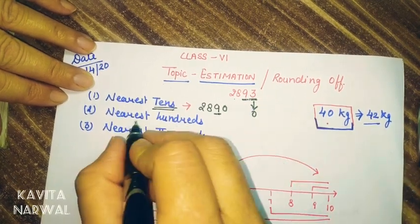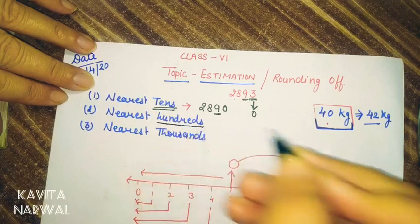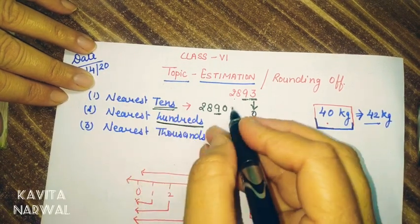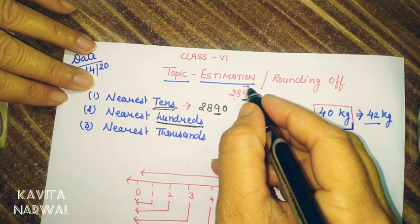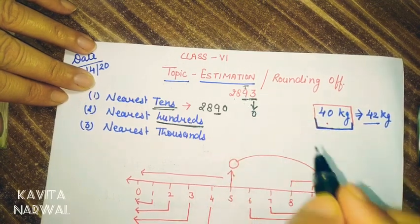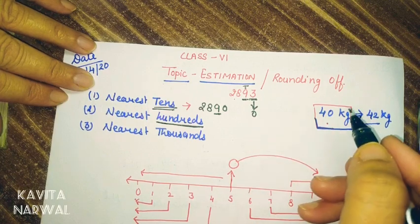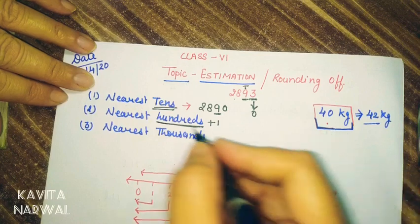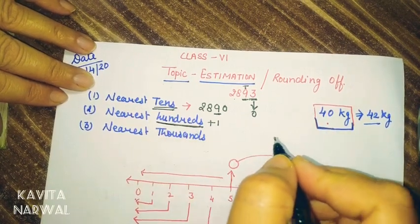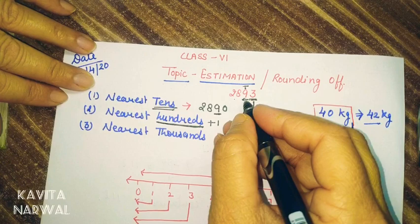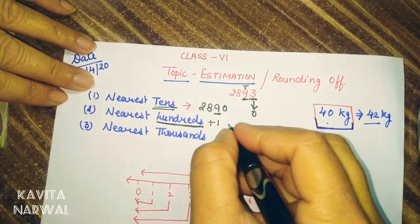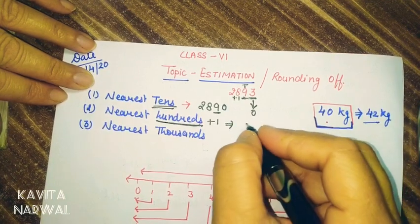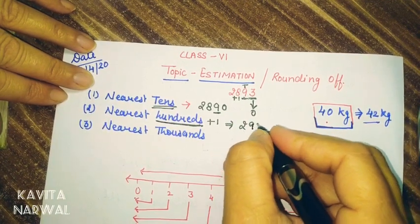Whenever we take the round off to the nearest hundred, we have to observe the tens place. If the tens place is 5 or more than 5, then we add 1 to the hundreds place. If less than 5, the hundreds place remains the same. Here the tens digit is 9, which is more than 5, so we add 1 to 8. The estimation of 2,893 nearest 100 is 2,900.